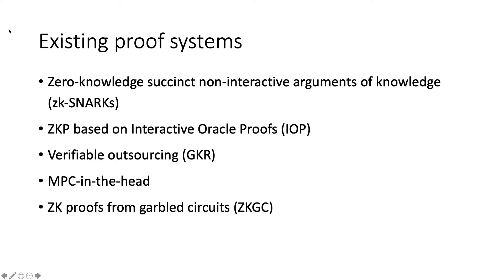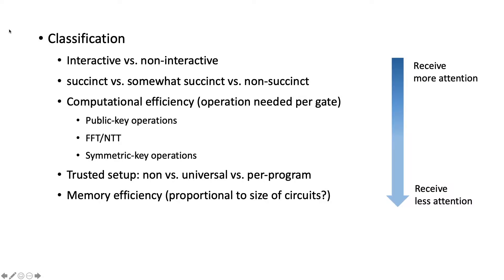There are many existing proof systems. For example, there are zk-SNARKs, zero-knowledge proofs based on interactive oracle proofs, verifiable outsourcing protocols based on the GKR protocols, the MPC in the head paradigm, and zero-knowledge proofs from garbled circuits. Among all these protocols, there are usually trade-offs between different resources. For example, regarding round complexity, is the protocol interactive or non-interactive? Regarding the proof size and verification time, is the protocol succinct or somewhat succinct or non-succinct?